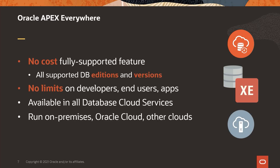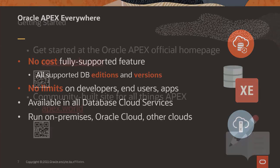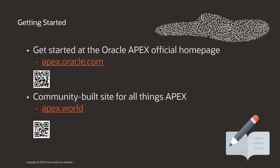It's available in all the database cloud services and it runs on-premise, Oracle Cloud, or even somebody else's cloud. The two main links you should not forget if you are new to Apex: apex.oracle.com, that's the official homepage — please visit it, look at the learn section, and navigate through the different sections. The other site is the community-built site, built by the community for the community: apex.world.